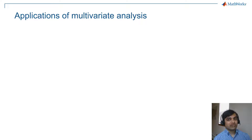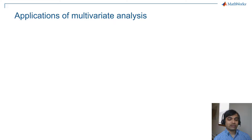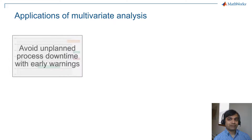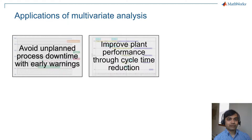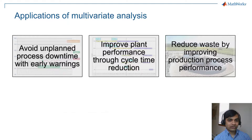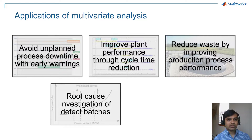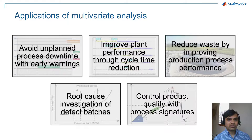Because these methods tell you exactly what variables are the source of issues, you can take very specific actions such as avoiding unplanned downtime, improving planned performance through cycle time reduction, reducing waste, root cause investigation of defective batches, and controlling product quality.